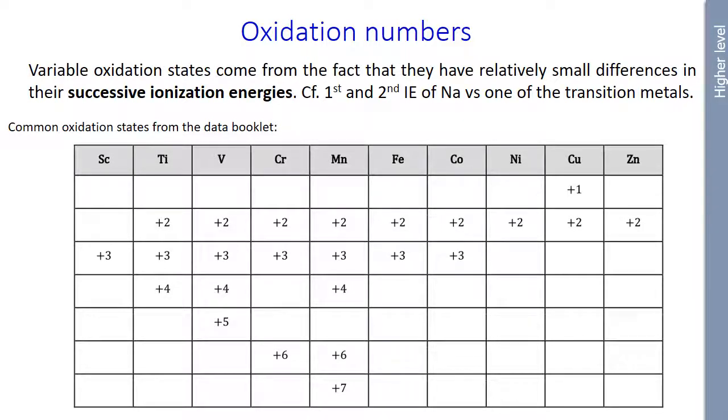And here are some common oxidation states from your data booklet. So for example, manganese has one, two, three, four, five different oxidation states, ranging from plus two to plus seven.